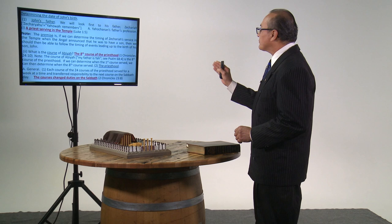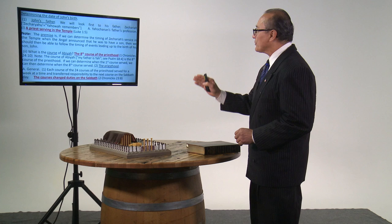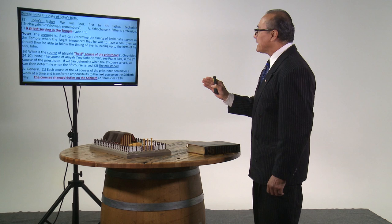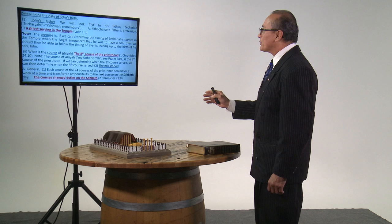Here is a calendar, December 4 BC before the common era. We're going to look at number 19 to number 1. This is the conception of the Messiah. We need to determine when John, Yochanan, was born. Once we have that date we can move six months into the future to determine the date of the Messiah's birth. Do the scriptures give us any hints as to when John was born? As it turns out, there are many such hints in the passages describing the events leading up to John's birth. Determining the date of John's birth. John's father, we will look first to his father, Zechariah.